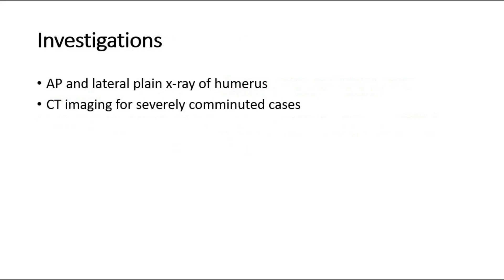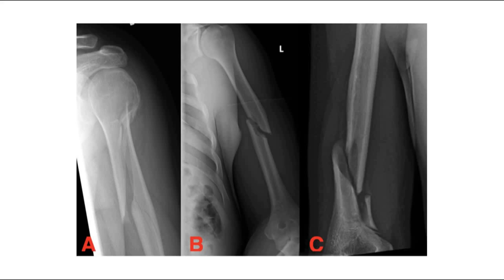Investigations include anteroposterior and lateral X-rays of the humerus. In severely comminuted cases, CT imaging may be requested for preoperative planning, although this is not routinely done. Here are some example X-rays: Picture A shows a proximal humeral shaft fracture, B shows a fracture at mid-shaft, and C shows a distal humeral shaft spiral fracture, also called a Holstein-Lewis Fracture.